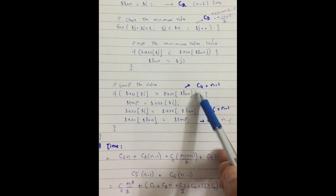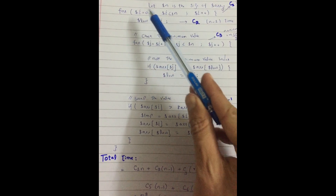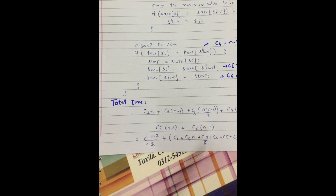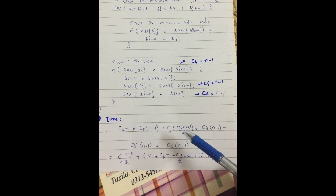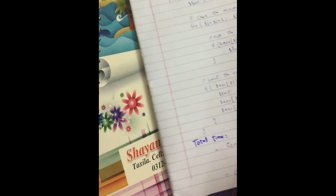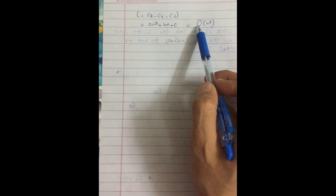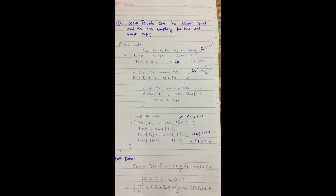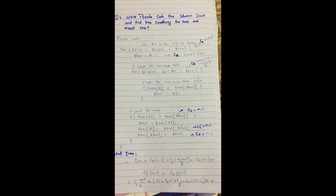The swap-related statements inside the outer loop each execute n-1 times. When we sum the total time complexity — c1×n + c2×(n-1) + c3×n(n+1)/2 + c4 + c5×(n-1) — and simplify, the equation reduces to the form an² + bn + c. Therefore the time complexity is O(n²). Selection sort has two nested loops, so its time complexity is O(n²) for both best and worst case.